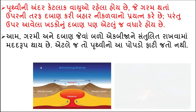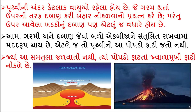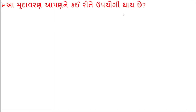ચિત્ર માં જોઈએ - પૃથ્વી ને અંદર આવેલો મેગ્મા, ગરમ વાયુઓ, ઉપણી તરફ દબાણ કરે છે. જ્યારે પૃથ્વી ના નીચે ના પડ નું દબાણ વધી જાય છે, ત્યારે તે મેગ્મા ના સ્વરૂપ માં બહાર નીકળે છે. ઉપર નો ખડક ફાટી જાય છે અને તેમાં થી જ્વાળામુખી નીકળે છે - ગરમ ગરમ લાવા બહાર નીકળે છે.